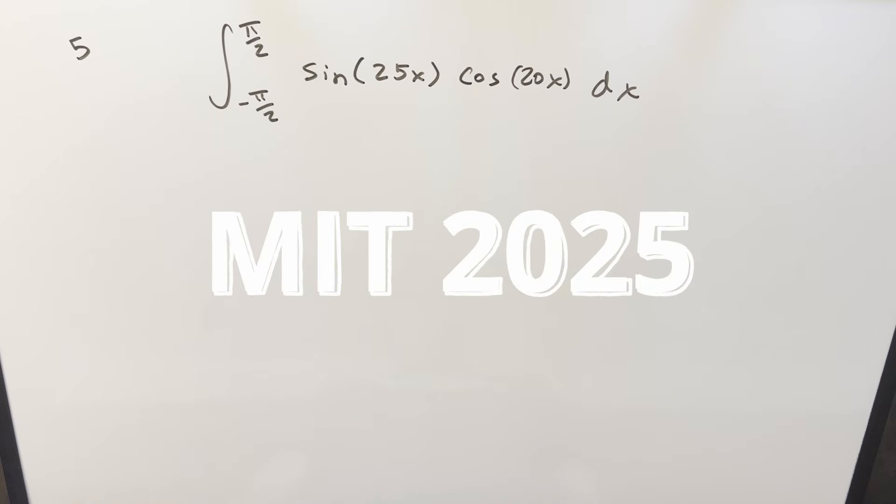Okay, we have an interesting integral here today from MIT 2025 number 5. We have the integral from minus pi over 2 to pi over 2 sine 25x times cosine 20x dx.